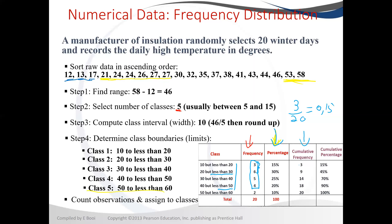We also calculate the cumulative percentages the same way: 3 divided by 20, 9 divided by 20, 14 divided by 20 gives you 70%, and you interpret it as: 70% of the days had a temperature less than 40. That's how you use the frequency distribution table.